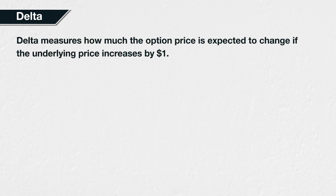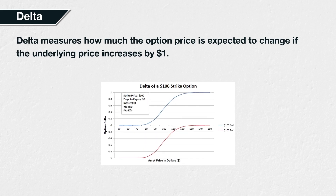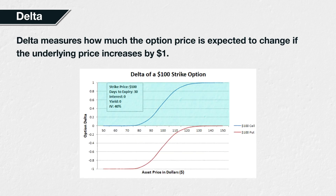Delta is probably the most important Greek. It is a measure of the sensitivity of the option price to changes in the underlying asset price — more specifically, how much the option price is expected to change if the underlying price increases by $1. Call options have a delta between 0 and 1, and put options have a delta between 0 and minus 1. Delta is positive for calls because if the underlying price increases, the right to buy that asset at a fixed price should logically also increase in value.